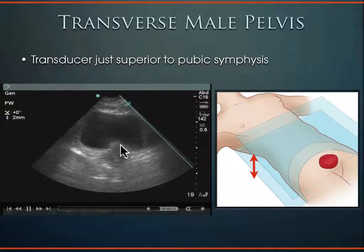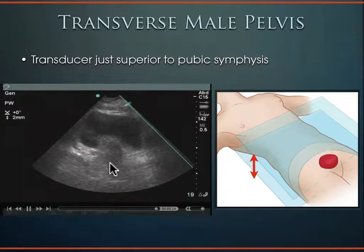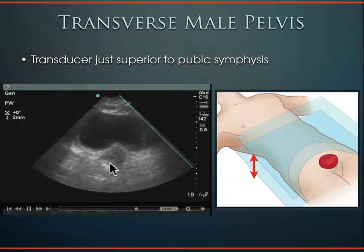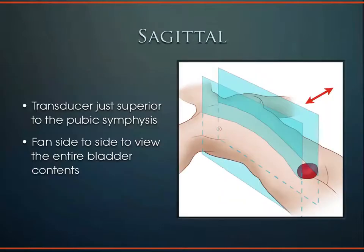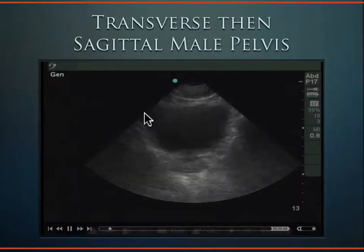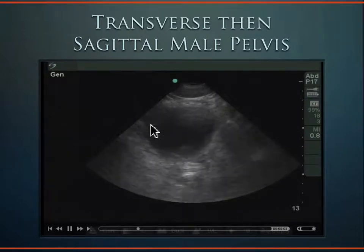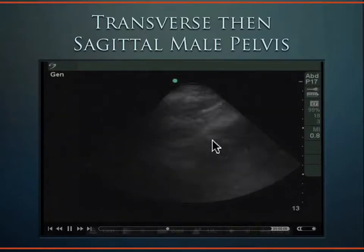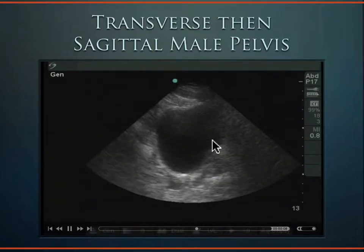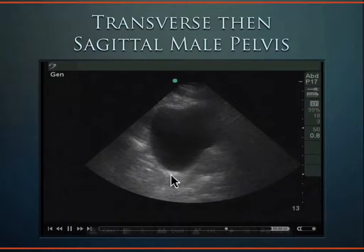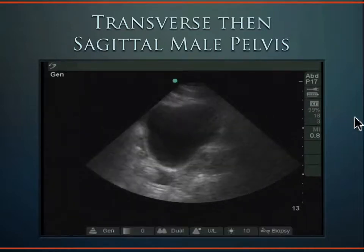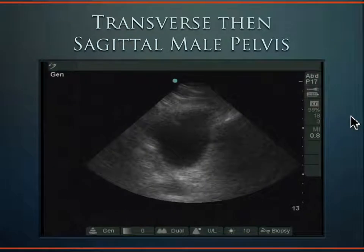In the male pelvis, posterior to the bladder is the prostate — which takes the location the uterus occupies in the female. In the sagittal plane, indicator toward the patient's head, probe just superior to the pubic symphysis, fanning side to side through the bladder. First look in transverse, fanning superiorly and inferiorly; then flip to sagittal. In the sagittal view the bladder looks a little more triangular shaped. Start transverse, fan through it, then go sagittal.